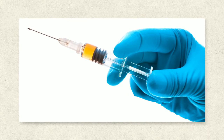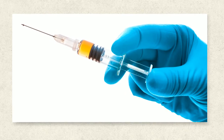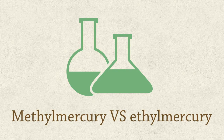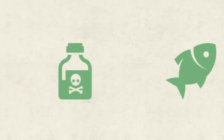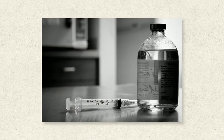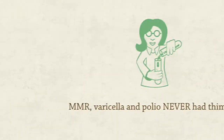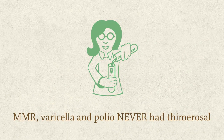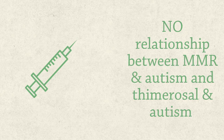Reason two is thimerosal — a preservative in vaccines which contains ethyl mercury. There are two types of mercury: methylmercury and ethyl mercury. At high levels, methylmercury can be toxic, and it is also found in fish. Ethyl mercury is found in thimerosal and it prevents the growth of bacteria in vaccines. The body gets rid of thimerosal very easily. In 2001, thimerosal was taken out of all childhood vaccines. MMR, varicella, and polio never contained thimerosal. In 2004, the Institute of Medicine of the National Academies stated there was no relationship between MMR and autism, or thimerosal and autism.